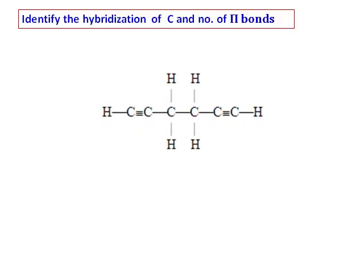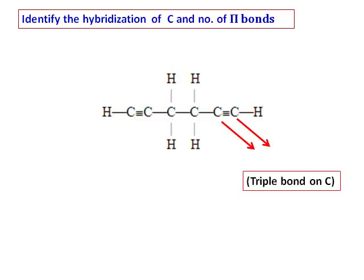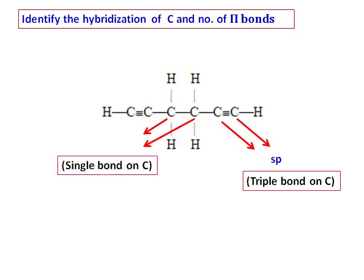In the next compound, identify the hybridization of carbon and the number of pi bonds. The first and second carbons have a triple bond and are therefore sp hybridized. The carbons in the center have single bonds and are sp3 hybridized.